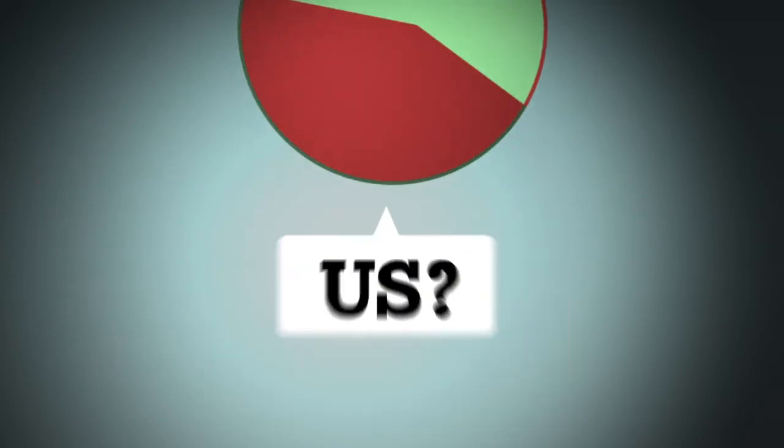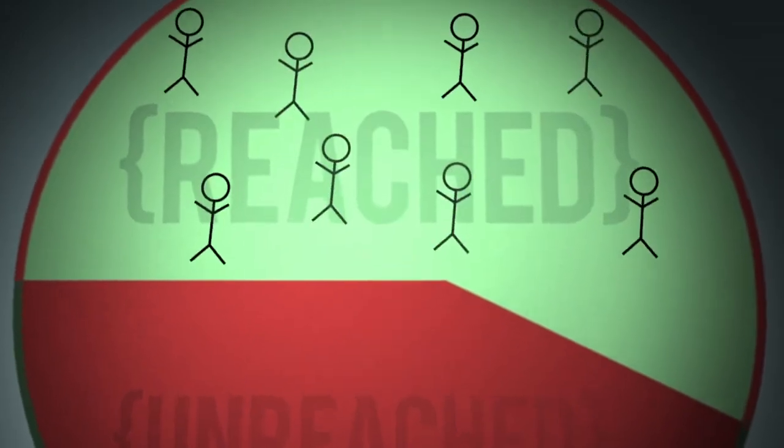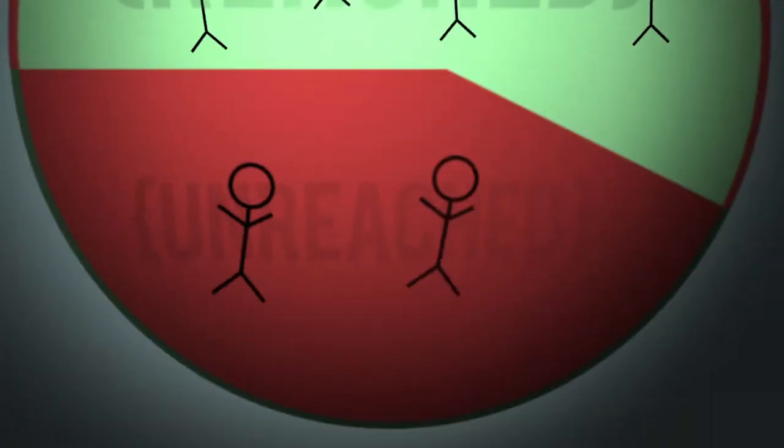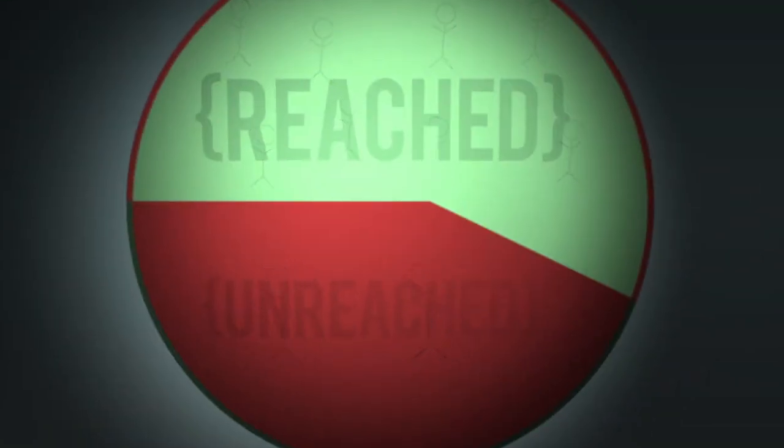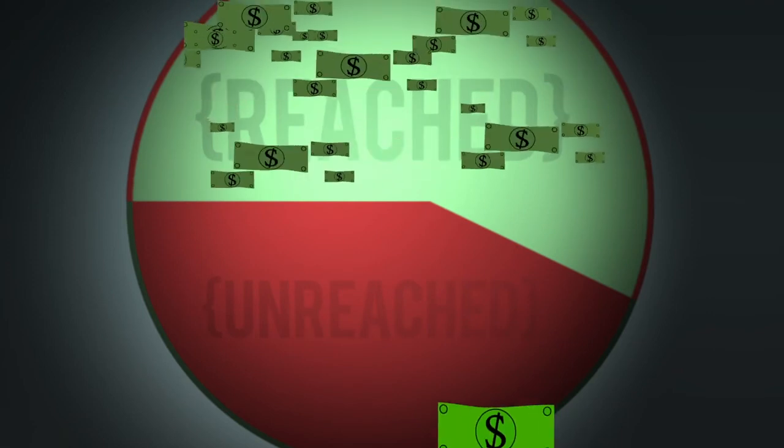Who will reach them when only 2 out of every 10 missionaries go to unreached people groups and 99 out of every $100 sent to the mission field bypasses them?